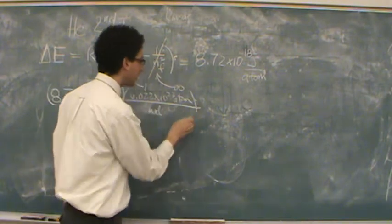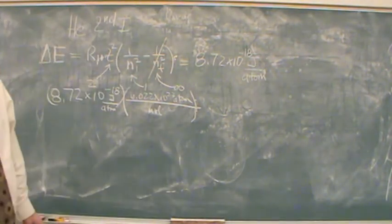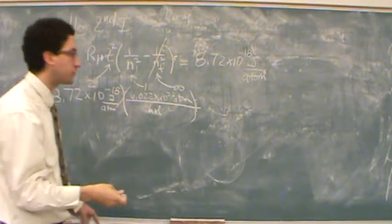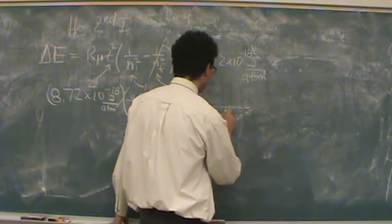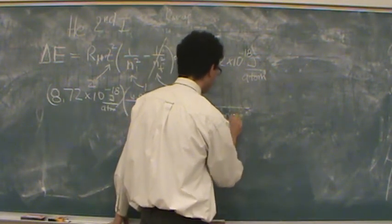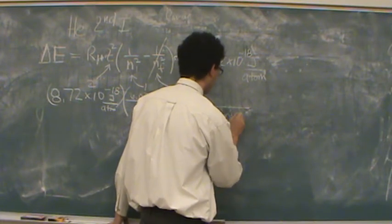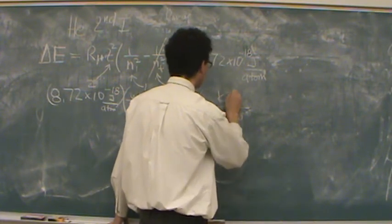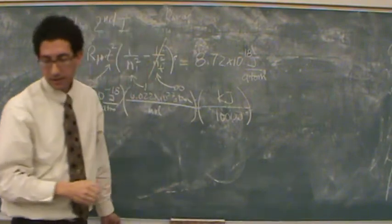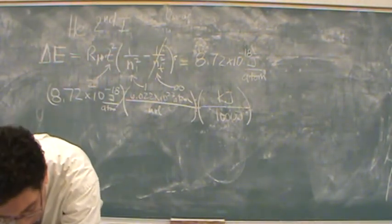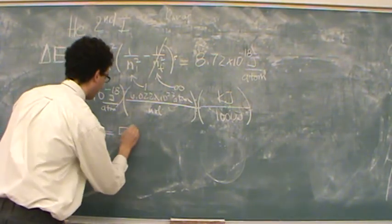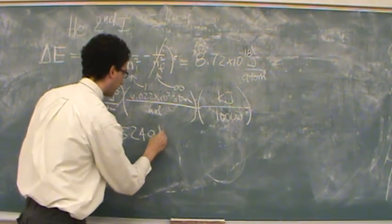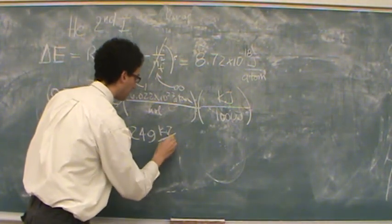And then one more thing. Based on the question they want in kilojoules, not joules. So there's 1,000 joules for the denominator for 1 kilojoule in the numerator. This is going to turn out to be 5249 kilojoules per mole.